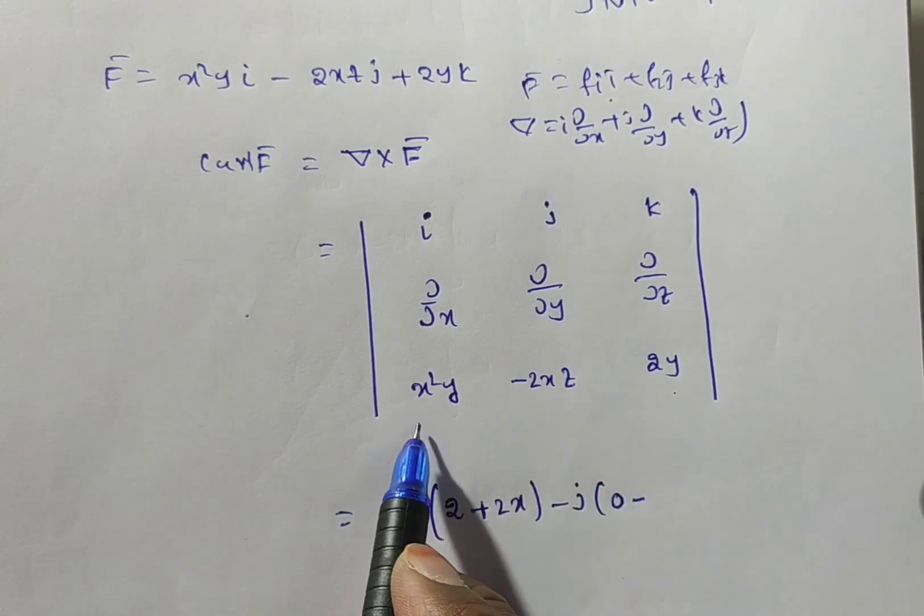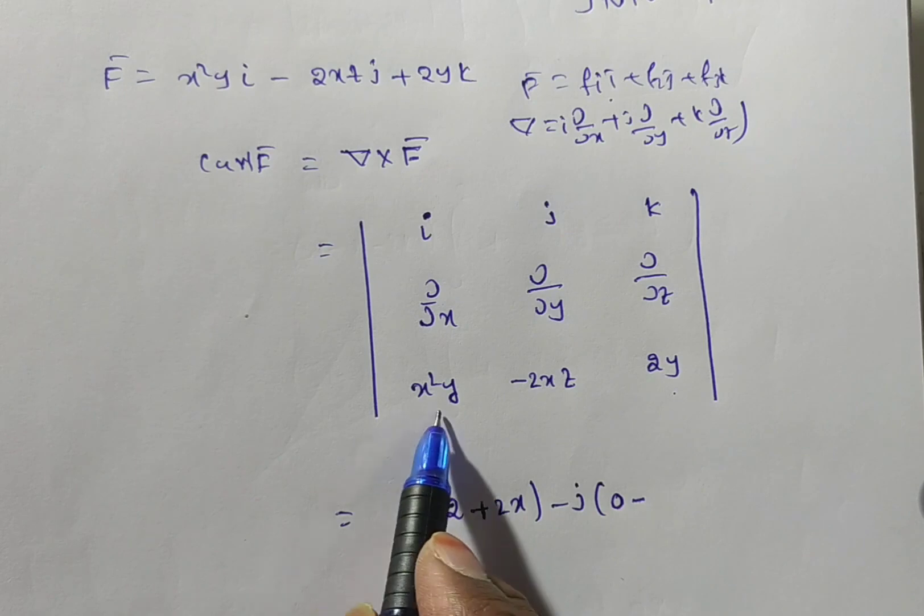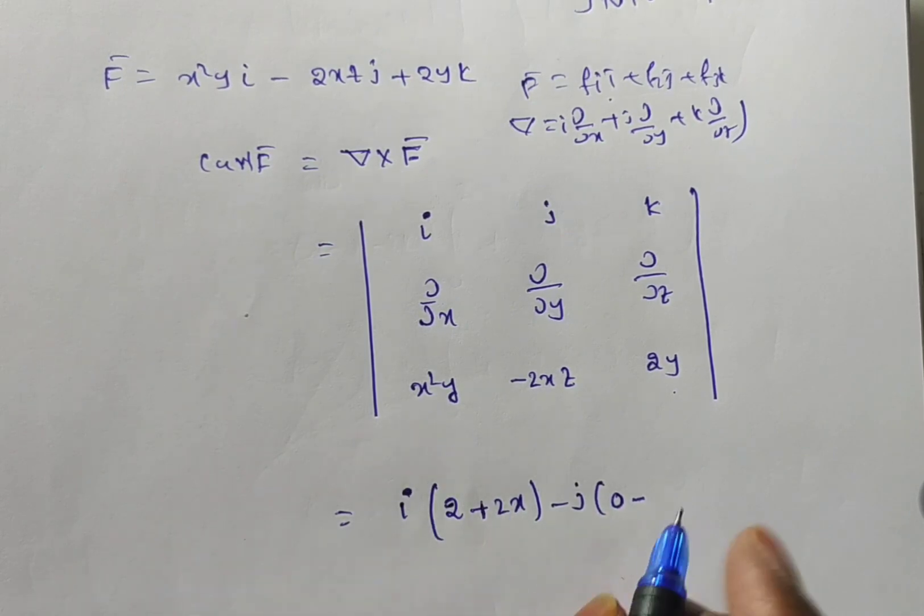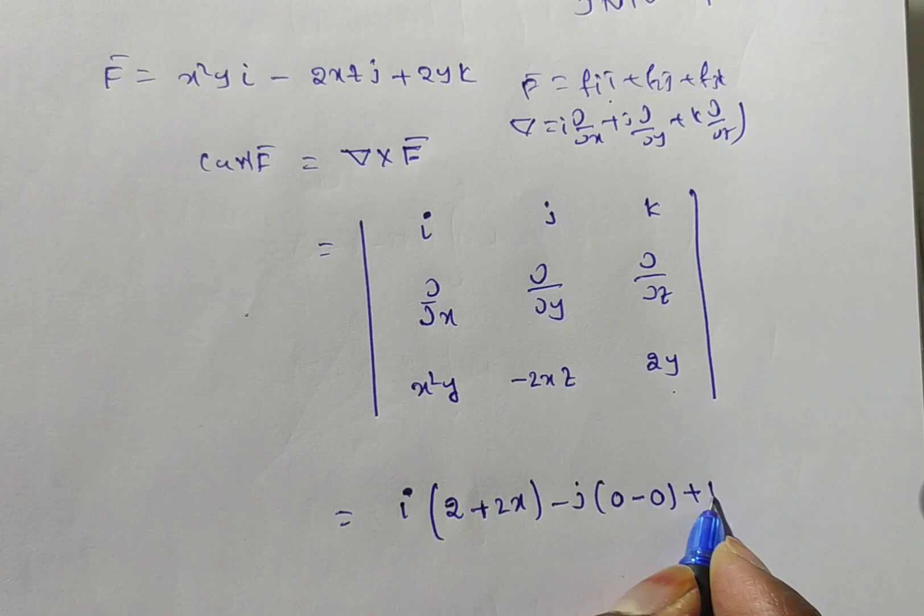Now with respect to z, if you have done, then what you will have, is there a z term in this function? No. So it will be a constant function, so constant derivative is zero.